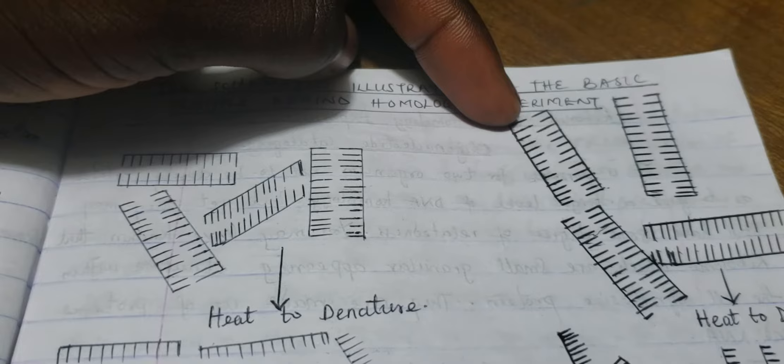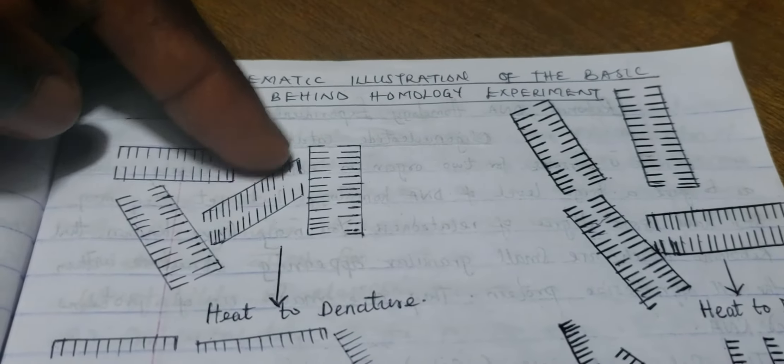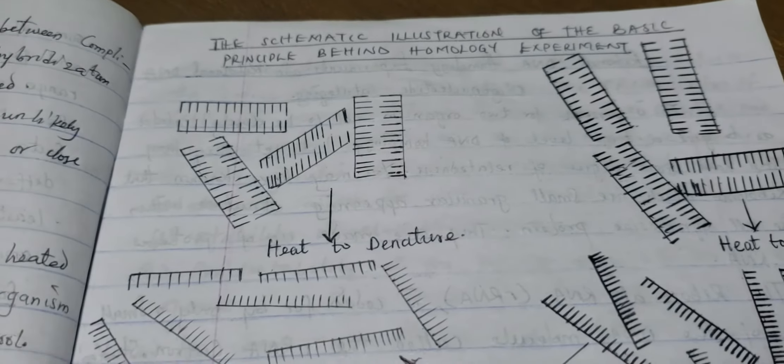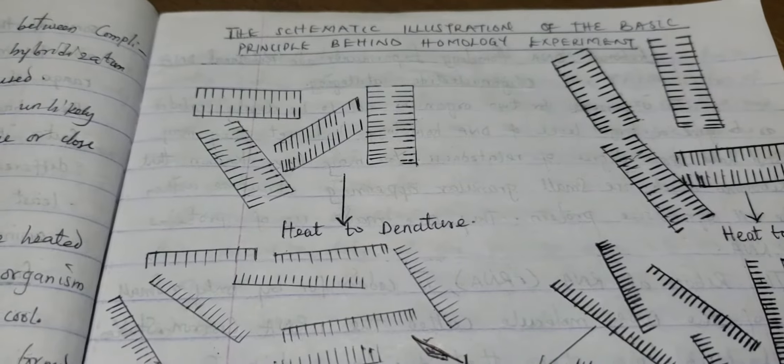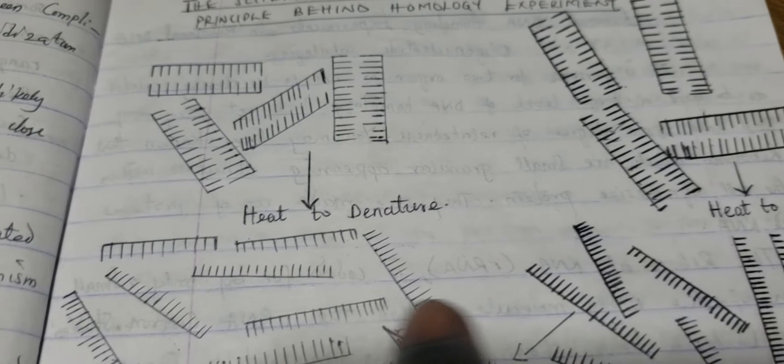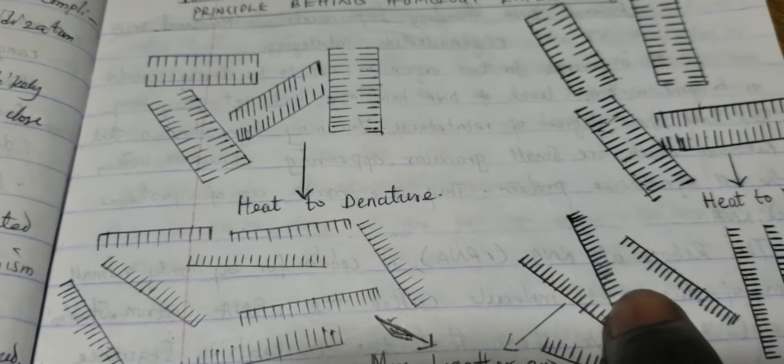Both species will be heated and denatured. This will break the DNA strands and make them single-stranded. As you can see, this one is thicker than this, so this will break down.